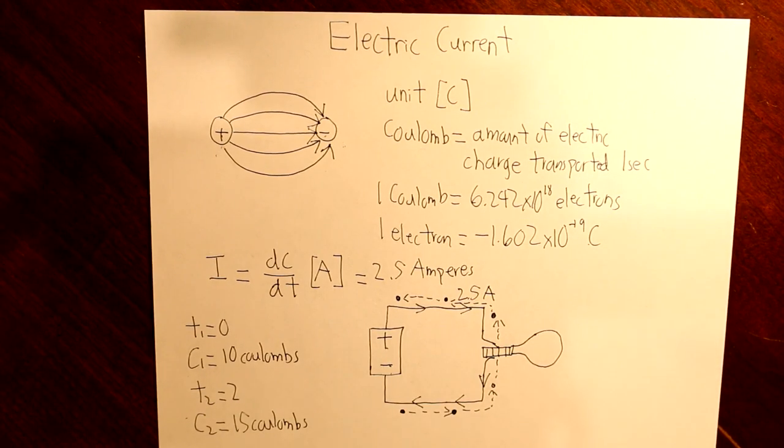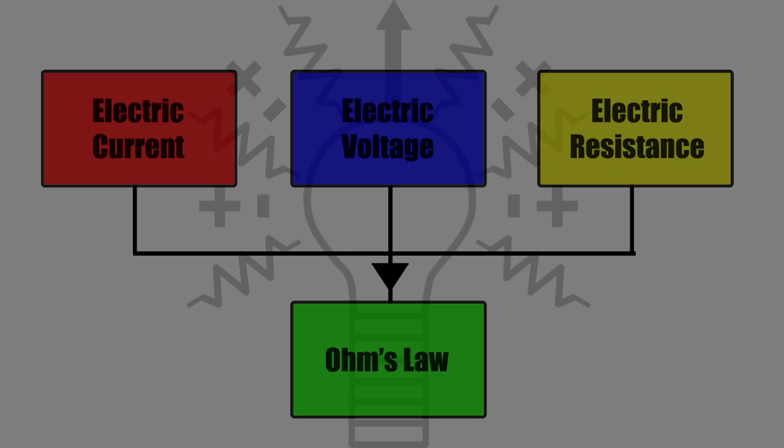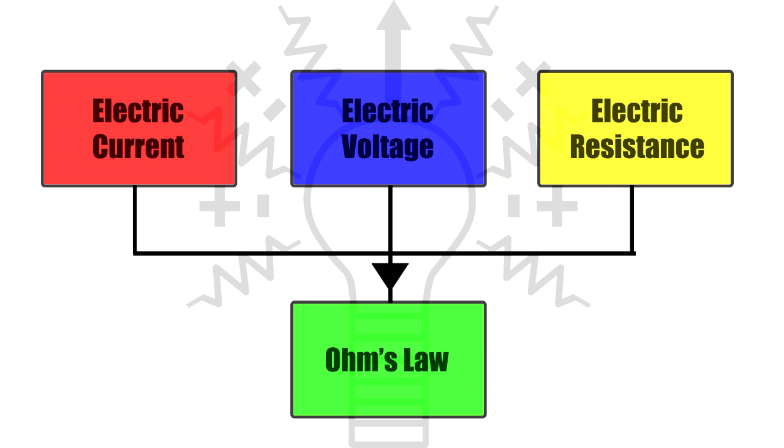To sum it up, electric current is the flow of electric charge. Thank you for watching this video. If you want to check out electric voltage or electric resistance, click on the annotation in the video. And if you want to watch even more, utilizing the knowledge of all three components, check out Ohm's Law. Then, if you want to subscribe to the channel, click on the notification.